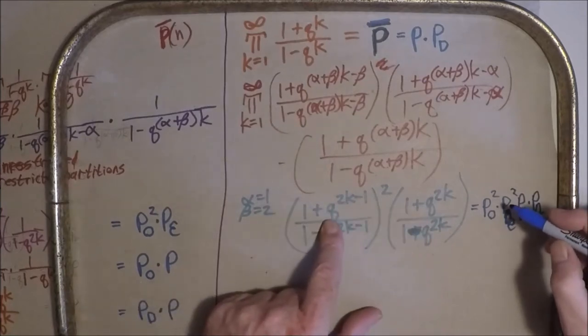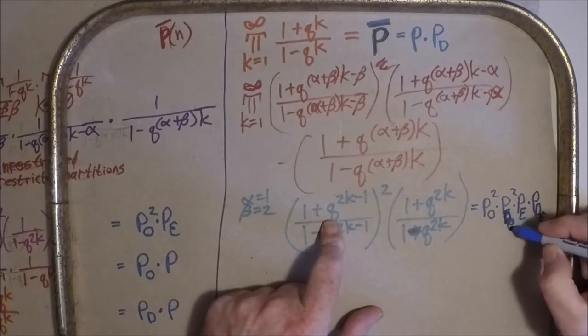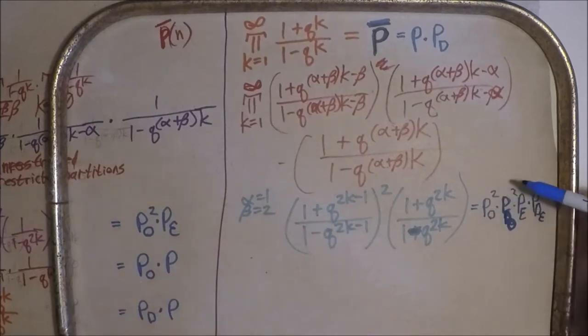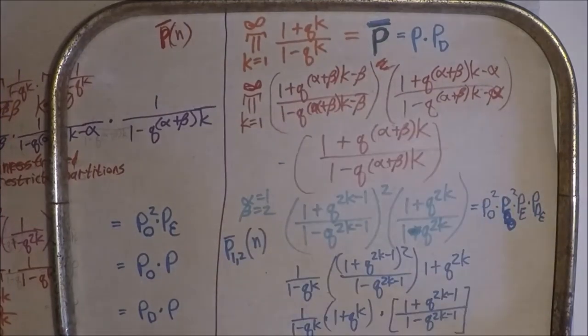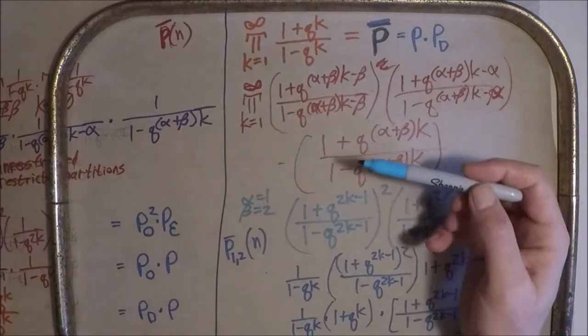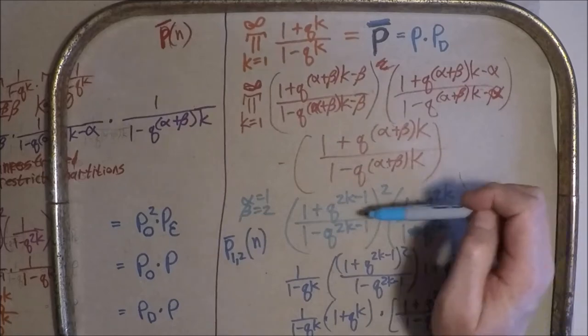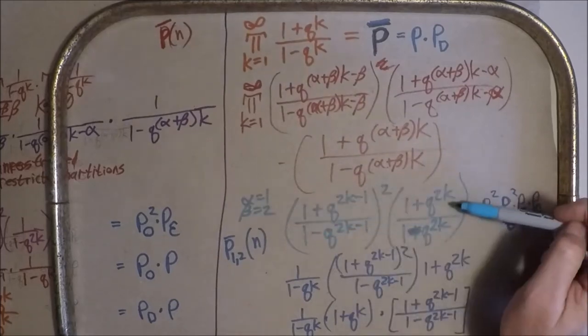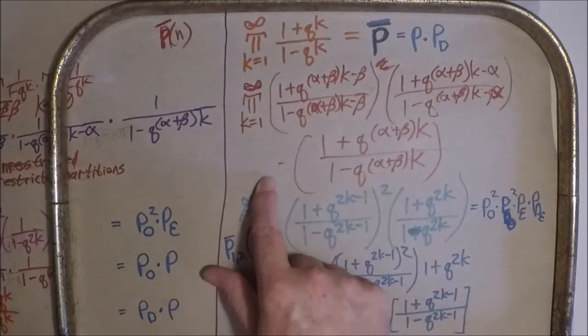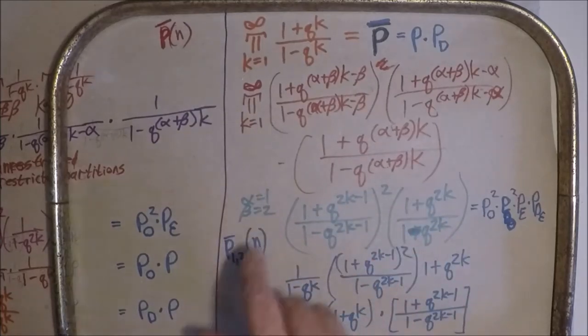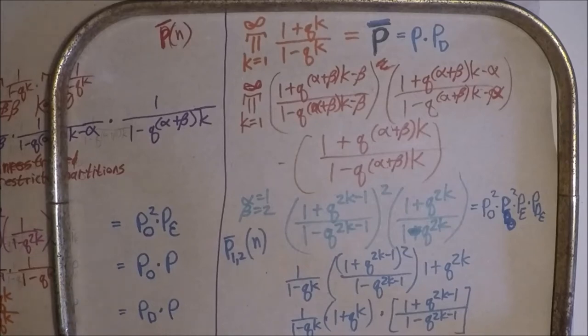Meaning I messed up on this one. That is P D O. So P O squared times P D O squared times P E times P D E is, and of course it's not because I jumped the shark. And I did not do alpha equals one, beta equals two here. I did the over, over partitions that we're going to get. But let's go back and do the alpha equals one, beta equals two just for, just to cover the ground.